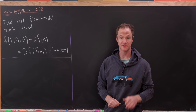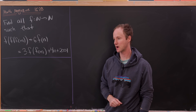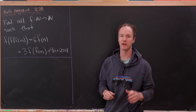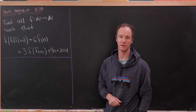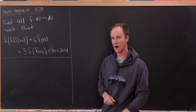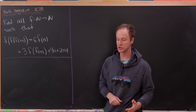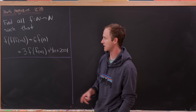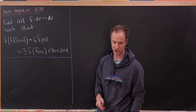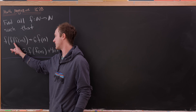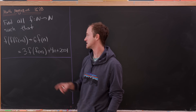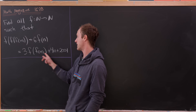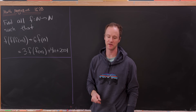Today we've got one of the craziest functional equation problems that I've ever seen. This problem and an outline for its solution can be found in the Math Magazine. Our goal is to find all functions f from natural numbers to natural numbers satisfying the following functional equation: f(f(f(n))) + 6f(n) = 3f(f(n)) + 4n + 2001.